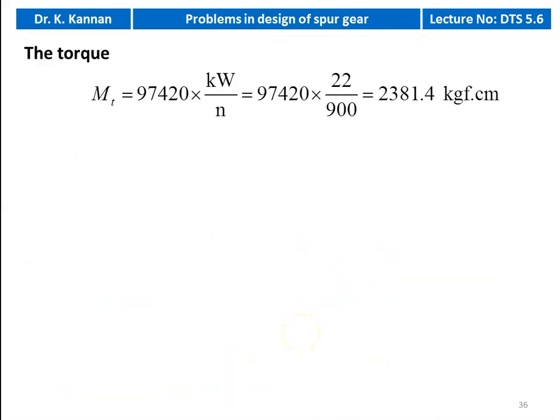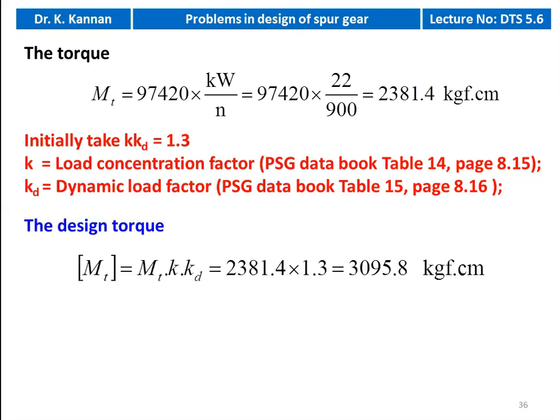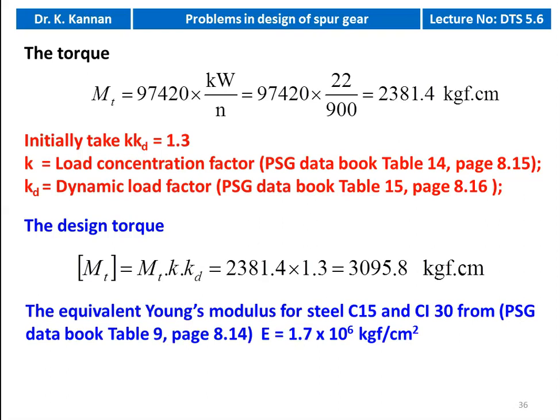We calculate the design torque. Torque MT = 97,420 × power / pinion speed = 97,420 × 22 / 900 = 2381.4 kgf·cm. We take KKD = 1.3, so design torque MT [design] = MT × KKD = 2381.4 × 1.3 = 3095.8 kgf·cm.